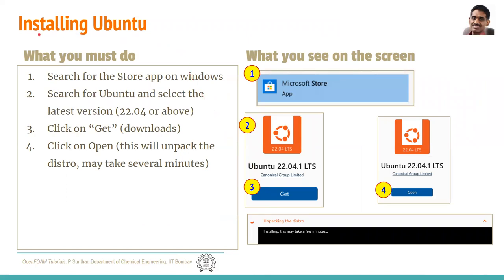Now we have to do installation of Ubuntu. Once WSL is ready, we can go and install Ubuntu. For that, you have to go to the app called Microsoft Store. On the Microsoft Store app, search for Ubuntu and pick the latest version. The current latest version is 22.04. Prefer to use the LTS version — LTS means Long Term Support. The current LTS version is 22.04.1 LTS. Select that and click Get, which will download the base Linux operating system, then click Open.